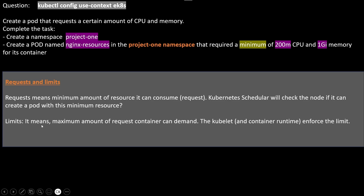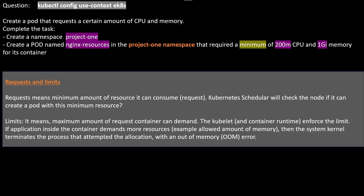Limit means the maximum amount of resources a container can demand. The kubelet and the container runtime enforce the limit. If applications inside the container demand more resources than the allowed amount of memory, the system kernel will terminate the process that attempted the allocation with an out-of-memory (OOM) error. Now it should be clear what request and limit mean.